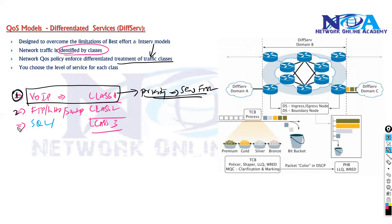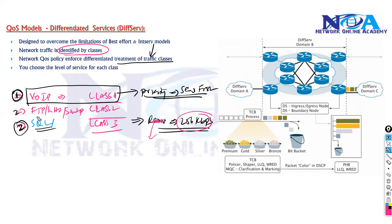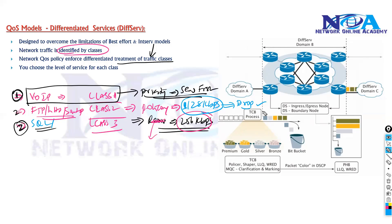For SQL traffic, we can reserve guaranteed bandwidth — for example, guarantee 256 kbps. For FTP traffic, we can use policing to restrict it so it can only send up to 128 kbps at a time. Any traffic exceeding that limit gets dropped. This prevents FTP from consuming all available bandwidth. Different options allow us to apply different treatments to different traffic types.